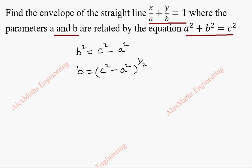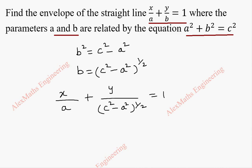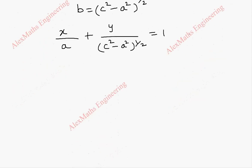Now we are going to substitute this into the given straight line, so x/a + y/(c² - a²)^(1/2) = 1. We are going to name this as our first equation, and we are going to differentiate this first equation with respect to the constant a.